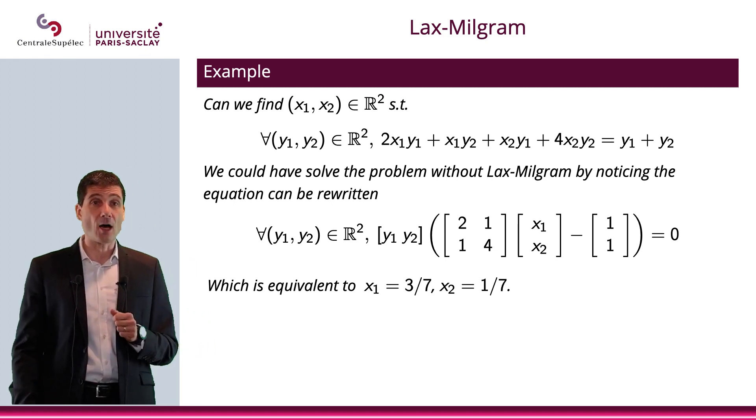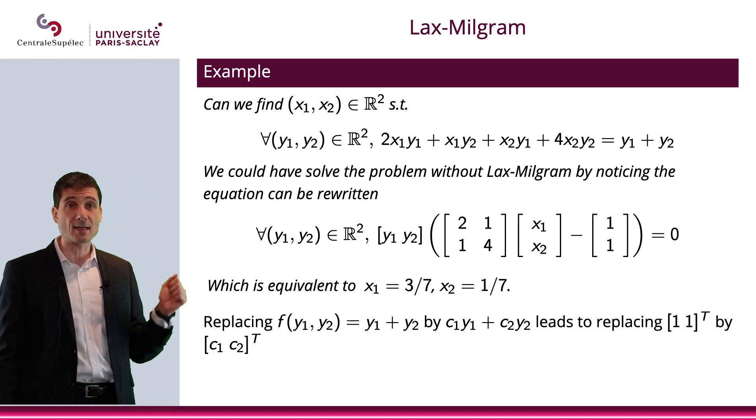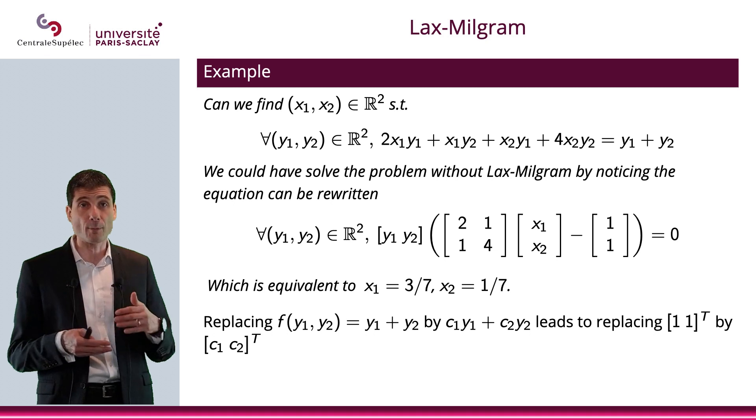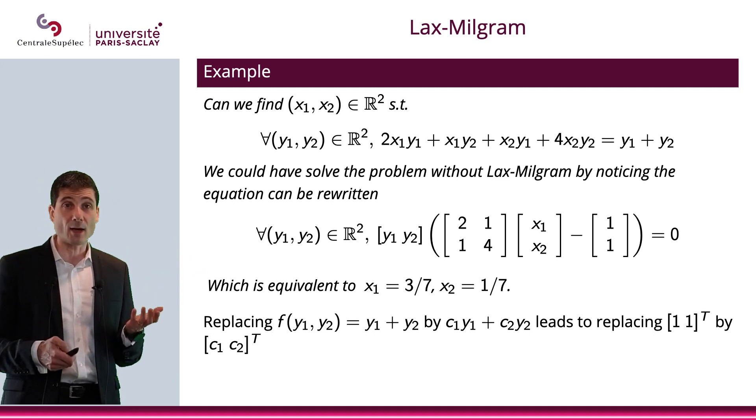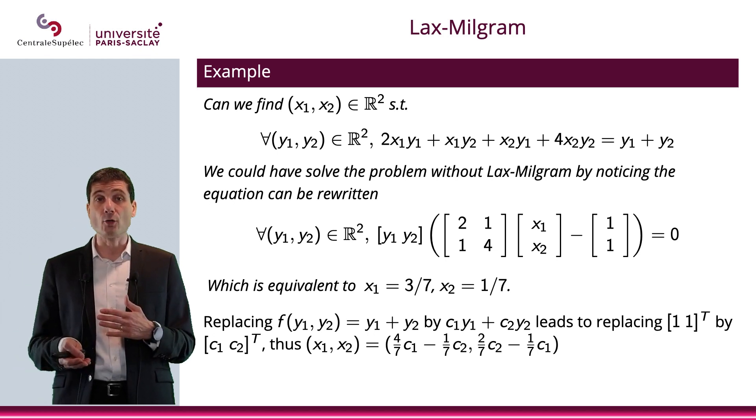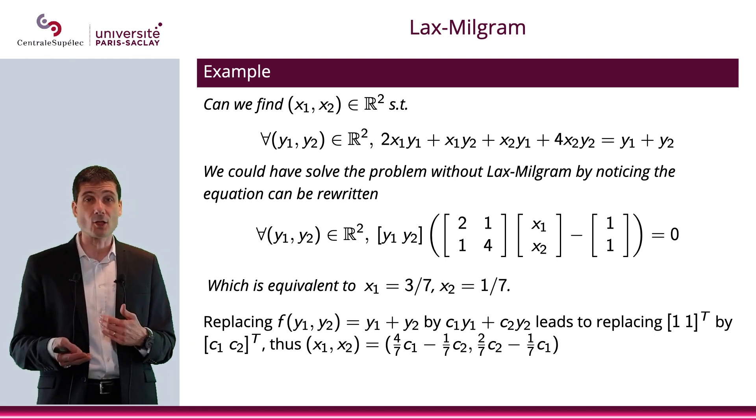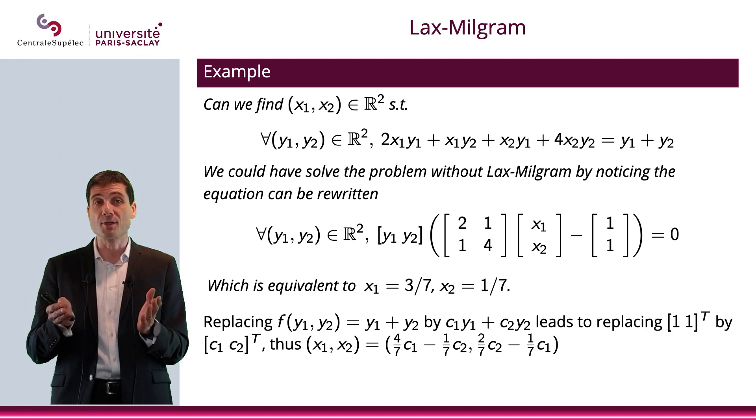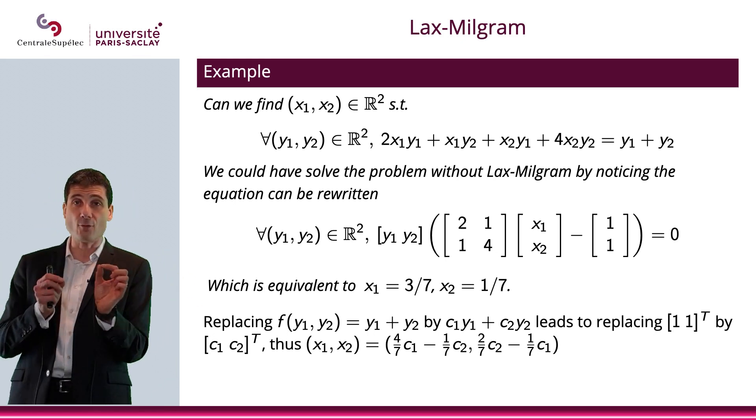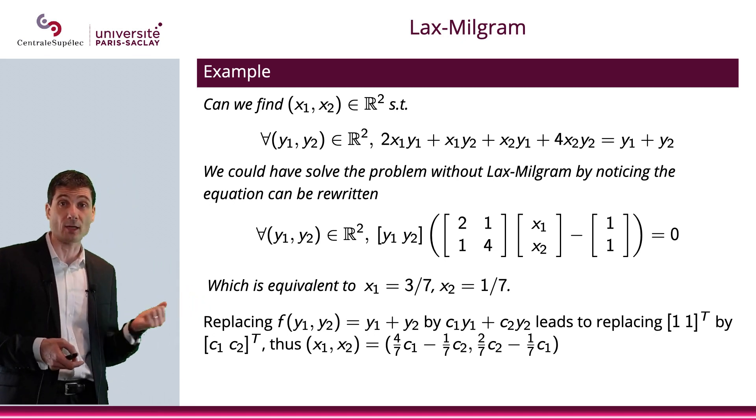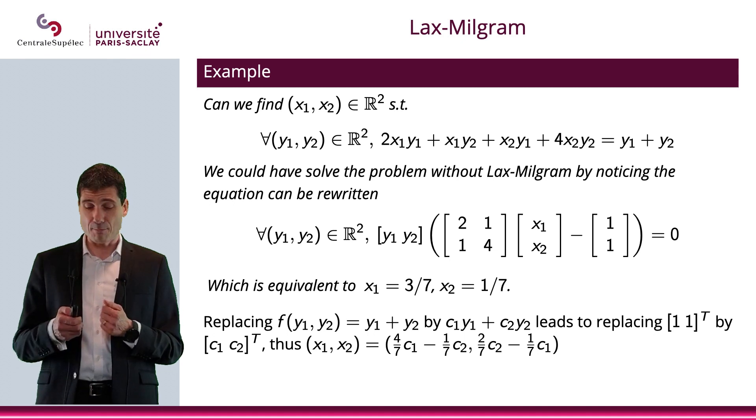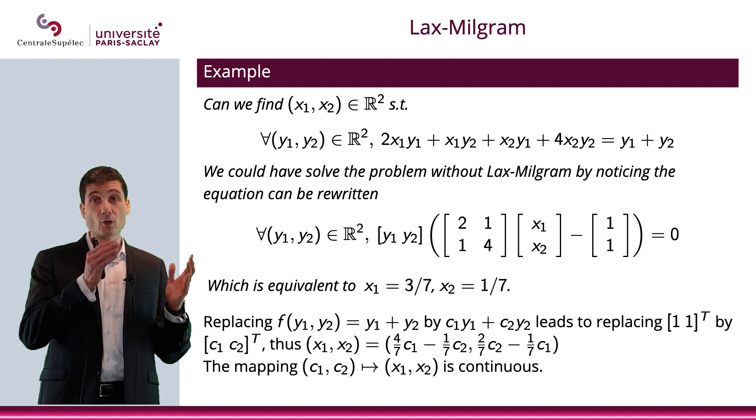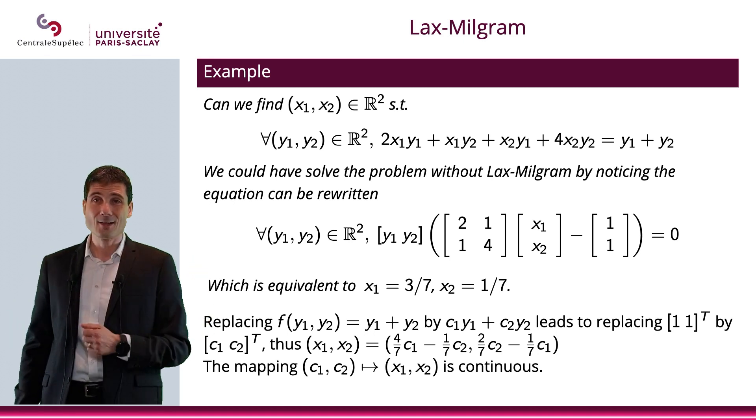By the way, if you are to replace y₁, y₂ to the right-hand side by c₁y₁ + c₂y₂, in other words, if you replace [1, 1] by [c₁, c₂], then what you end up with is x₁, x₂, which is (4/7)c₁ - (1/7)c₂ and (2/7)c₂ - (1/7)c₁. And, obviously, if c₁ = c₂ = 1, then you get 3/7, 1/7. But if you're slightly off, then, obviously, you have continuity with respect to c₁ and c₂ as expected from the Lax-Milgram theorem. So the mapping from R² to R² that associates c₁, c₂ to x₁, x₂ is, indeed, continuous.